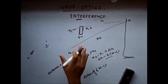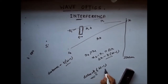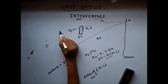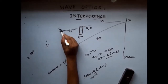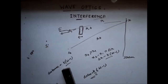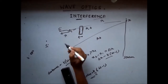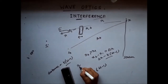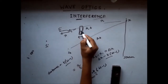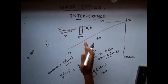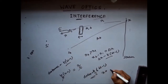Another way to look at this setup: there is a delay produced by this glass slab. This delay is equivalent to shifting the source S1 in this direction, because if I shift the source to a new position S1 dash, that also introduces a delay. How much shift is needed? If the shift is X, the time taken from S1 dash to S1 is X by C. This should equal the delay produced by the slab, which is T(mu minus 1) by C. So introducing a glass slab is equivalent to shifting the position of S1 by a distance of T(mu minus 1).